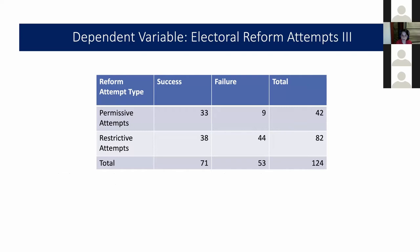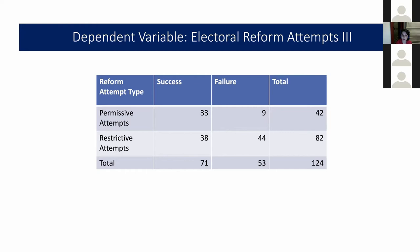Some countries had two or three electoral reform attempts per legislative term, which posed a problem since the unit of analysis is the legislative term and election cycle. I took only one electoral reform attempt per legislative cycle, and this didn't cause a problem because all reforms initiated in the same legislative term were in the same direction. In total, this gave me 109 electoral reform attempts, of which 68 are restrictive and 41 are permissive.